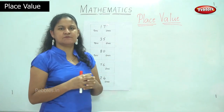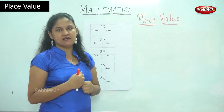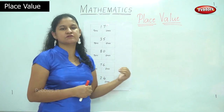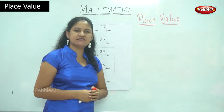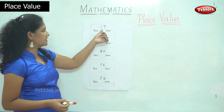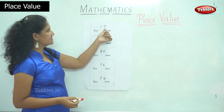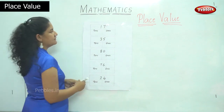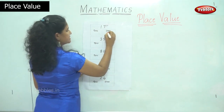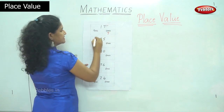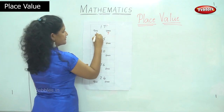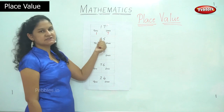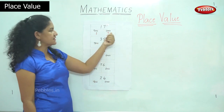These numbers have been randomly selected from 1 to 100, and I am showing you how to write the place value. The next number is 17. In the 1s place we have number 7 and in the 10s place I have number 1. So I read it as 1 10s and 7 1s, or 17.